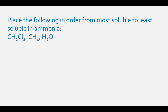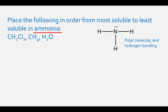Place the following in order from most soluble to least soluble in ammonia. First, we need to figure out what kind of molecule ammonia is. Ammonia is NH₃. If you draw the Lewis structure for ammonia, you will see that it has polar bonds and is a polar molecule. Since nitrogen has hydrogen attached to it, this molecule can also form hydrogen bonds. So polar or ionic compounds will be soluble in ammonia and nonpolar molecules will not.